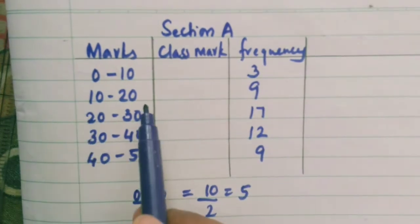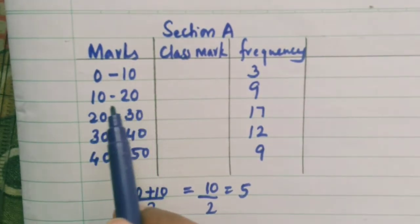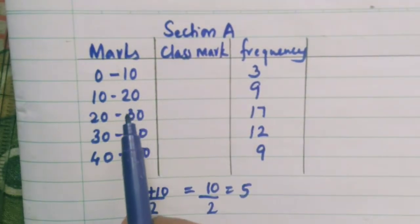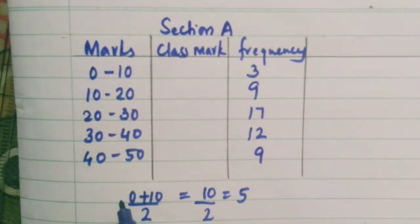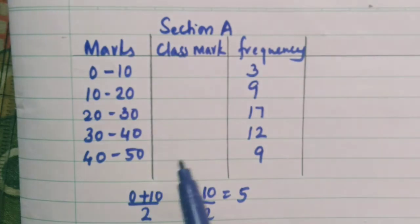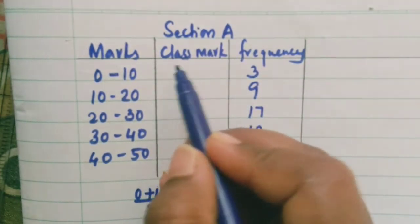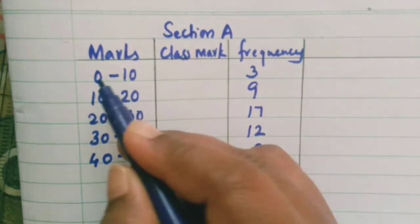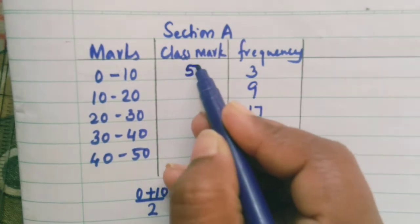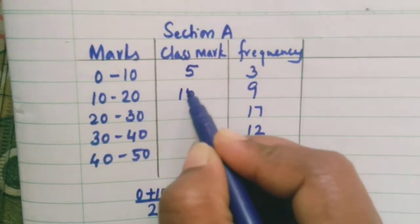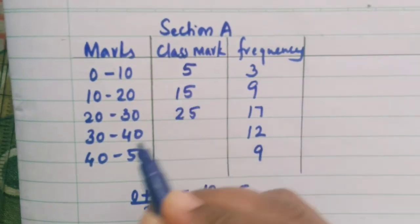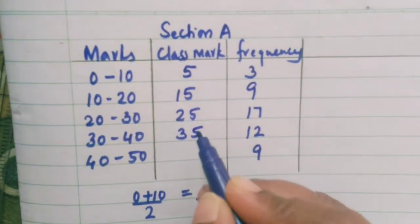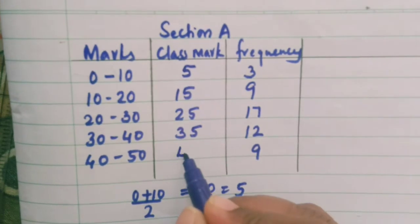The same way when you see 10 plus 20 is 30, 30 divided by 2 is 15. Since the calculations are very easy we can write it directly. This is called as the class mark. Here 0 to 10 class mark is 5, 10 to 20 it is 15, 20 to 30 it is 25, 30 to 40 it is 35 and 40 to 50 is 45.